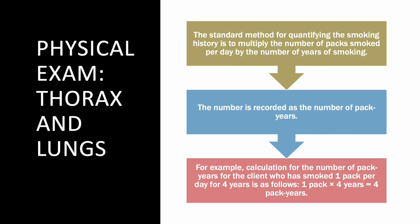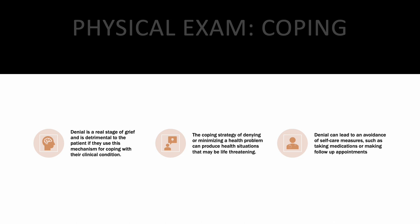When assessing lung history, calculate pack years. Multiply the number of packs smoked per day by the number of years smoked. For example, one pack per day for four years equals four pack years. Know how to do that calculation.